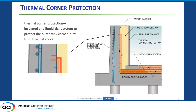The thermal corner protection — at least the definition of it in the code — is an insulated and liquid-tight system to protect the outer tank corner joint from thermal shock. As Ralph indicated, that applies to a monolithic joint between the concrete slab and the concrete wall. The thermal corner protection and secondary bottom consists of the horizontal embed, the horizontal plate and vertical plate, and finally the secondary bottom — along with the insulation behind that — to protect this joint during a spill condition in the annular space.